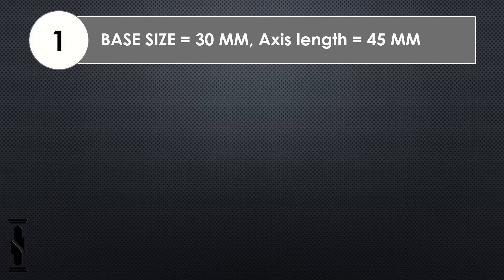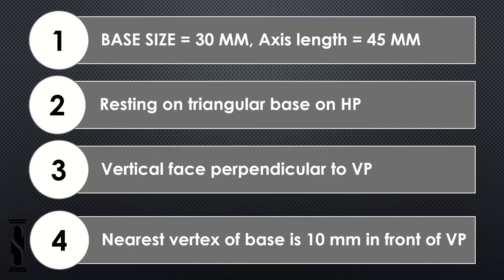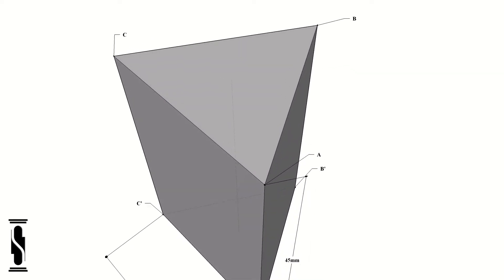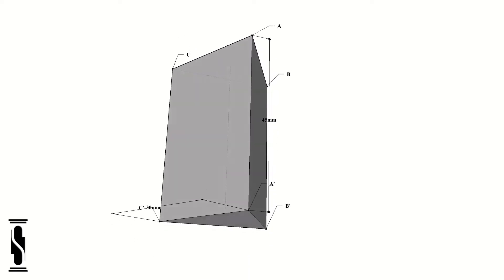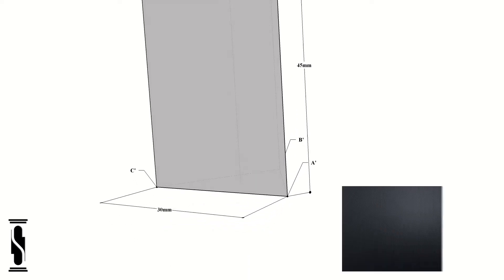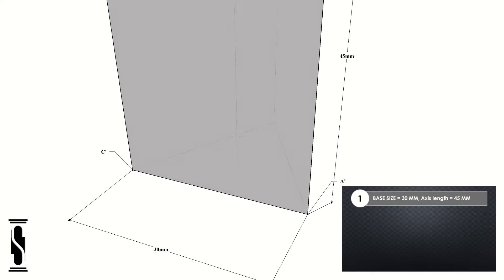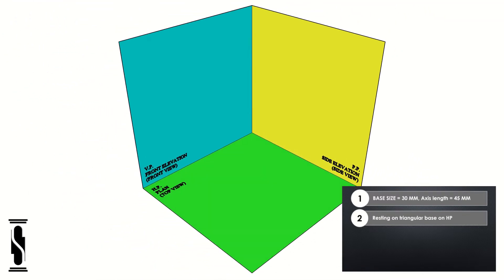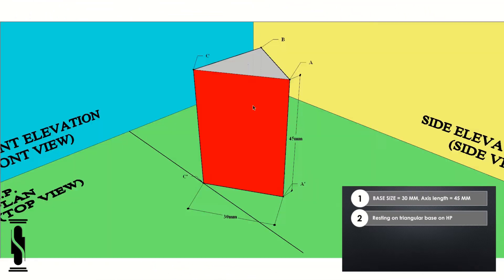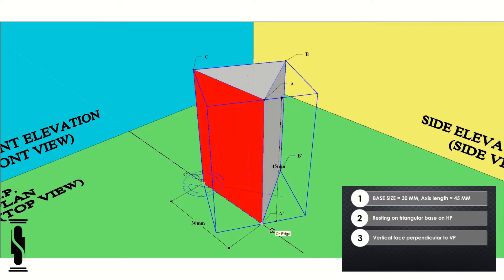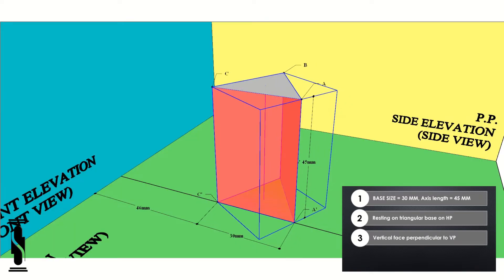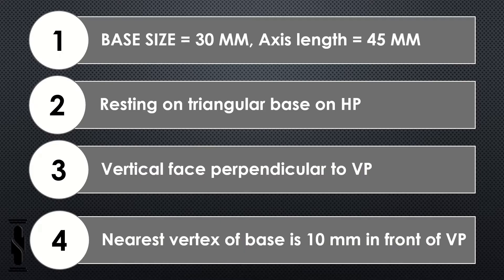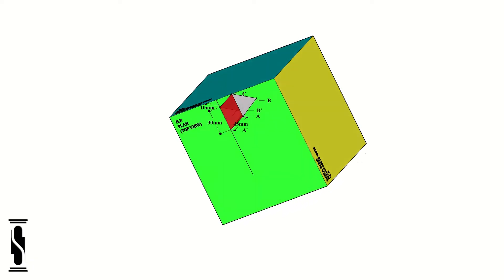Now, let's break down the question into checkpoints and understand it with the help of 3D visualization. Here we have a triangular base prism — I named the upper base as A, B, and C, and the lower base as A dash, B dash, and C dash. The given size of the prism is: base side equals 30mm, axis length equals 45mm. Object's conditions: prism is resting on a triangular base on HP, and one of its vertical faces is perpendicular to VP. The nearest vertex of the base is 10mm in front of the VP.